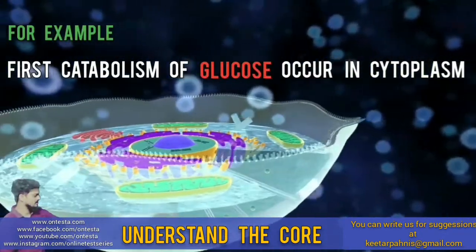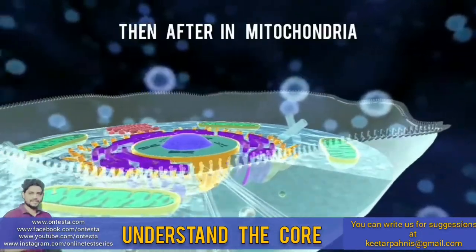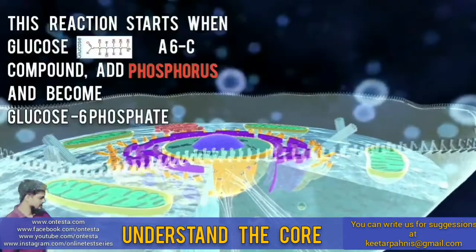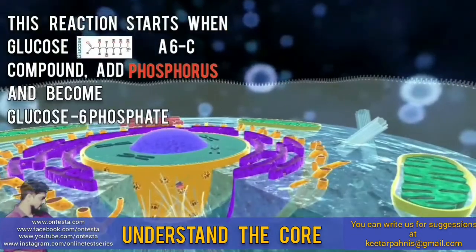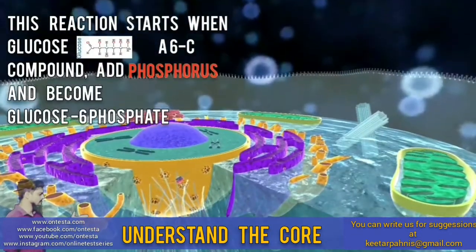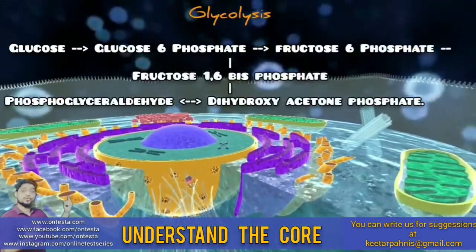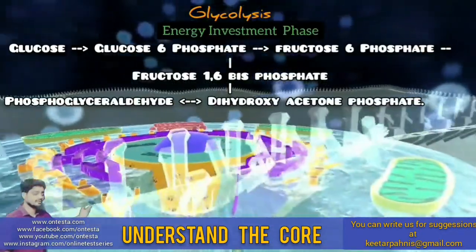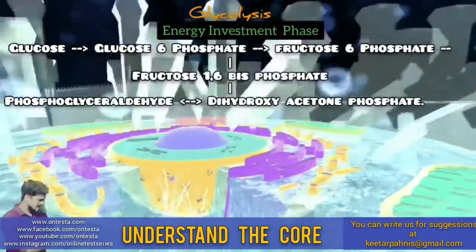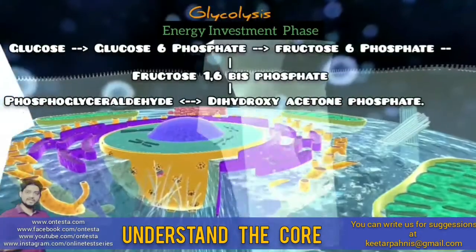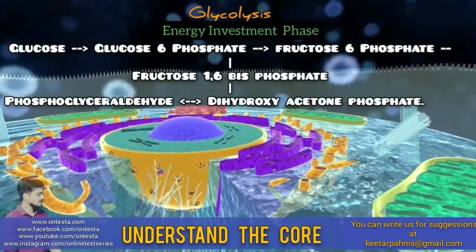The first catabolism of glucose occurs in cytoplasm. Thereafter in mitochondria energy molecules are released after completion of the final ETS. This reaction starts when glucose, a 6-carbon compound, adds phosphorus and becomes glucose 6-phosphate. It consumes ATP to add phosphate. Another ATP is consumed in conversion of fructose 6-phosphate to fructose 1,6-bisphosphate.